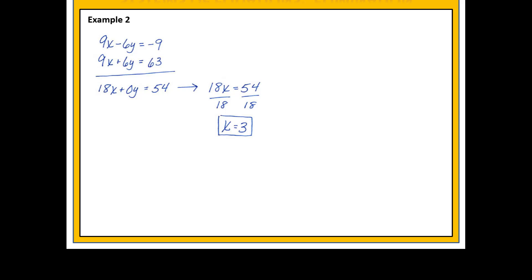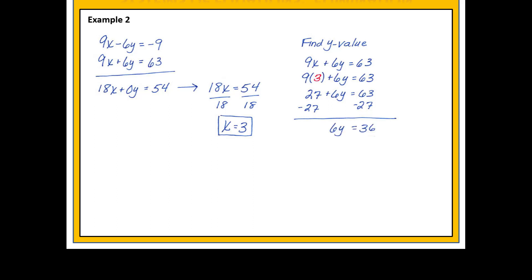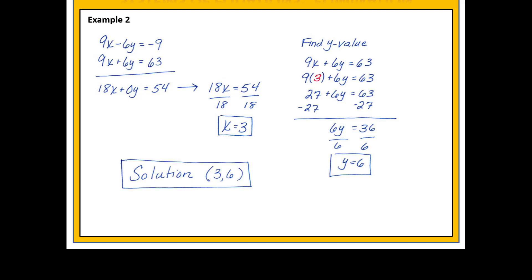In the solution to this system of equations, the x value is 3. Now let's find the y value. We choose one of the original equations — either one will work. I'll choose the second one. We know that x is 3, so we substitute 3 in place of x and then we solve for y. We find that the y value is 6. So in this system, the solution is x equals 3 and y equals 6, or the ordered pair 3 comma 6.